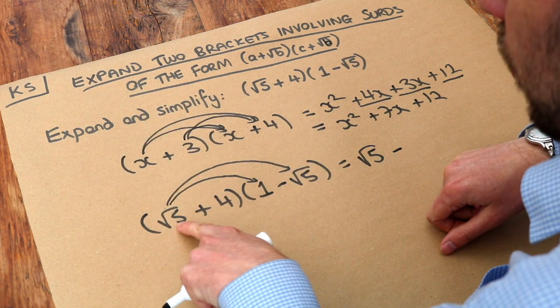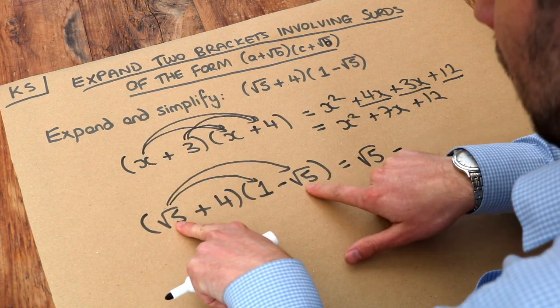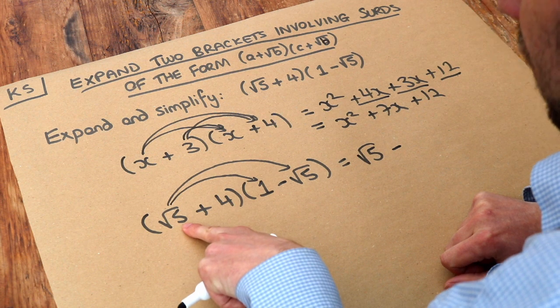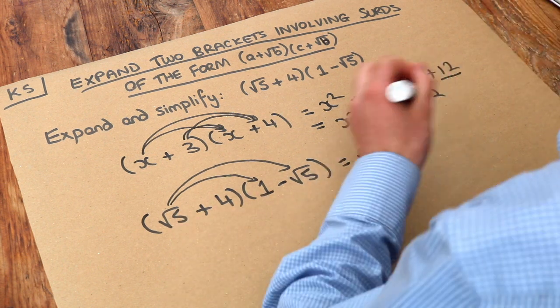But a simpler way of doing it is if you have the square root of a number times by itself, you just get that number without the square root. So root 5 times root 5 is just 5.